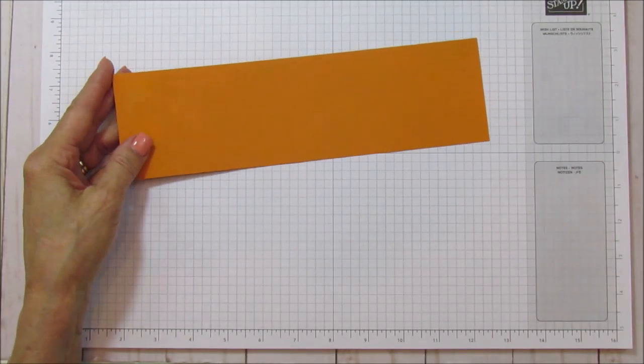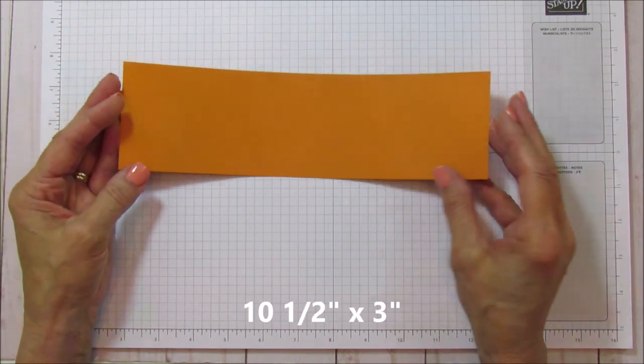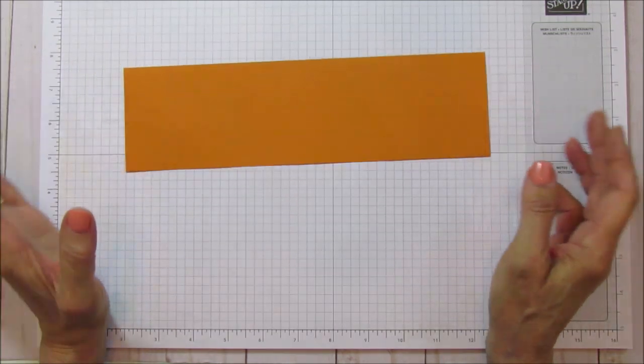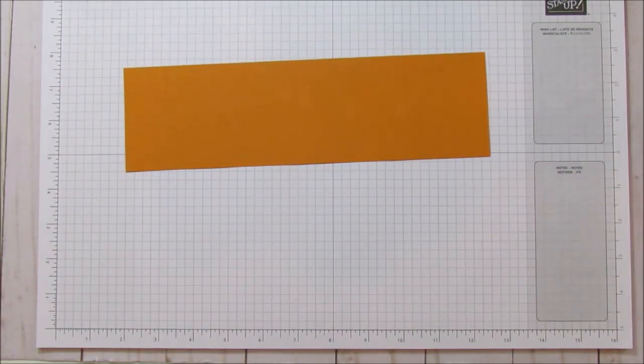What you're going to need for this is a piece of ten and a half by three, and I am doing pumpkin pie only because I had some scrap and I wanted to use this. You can use whatever color you like.